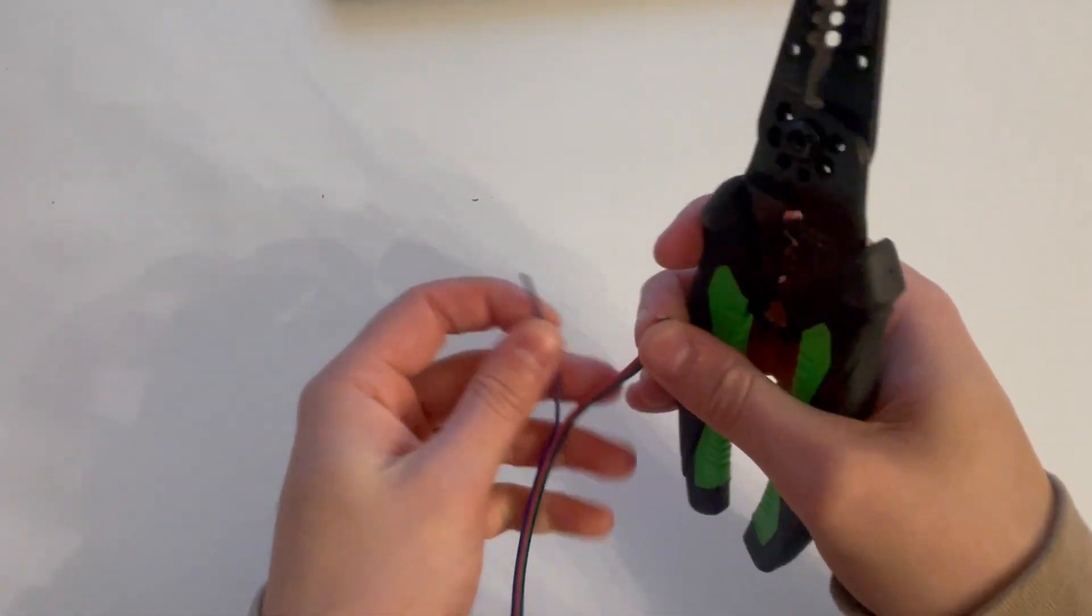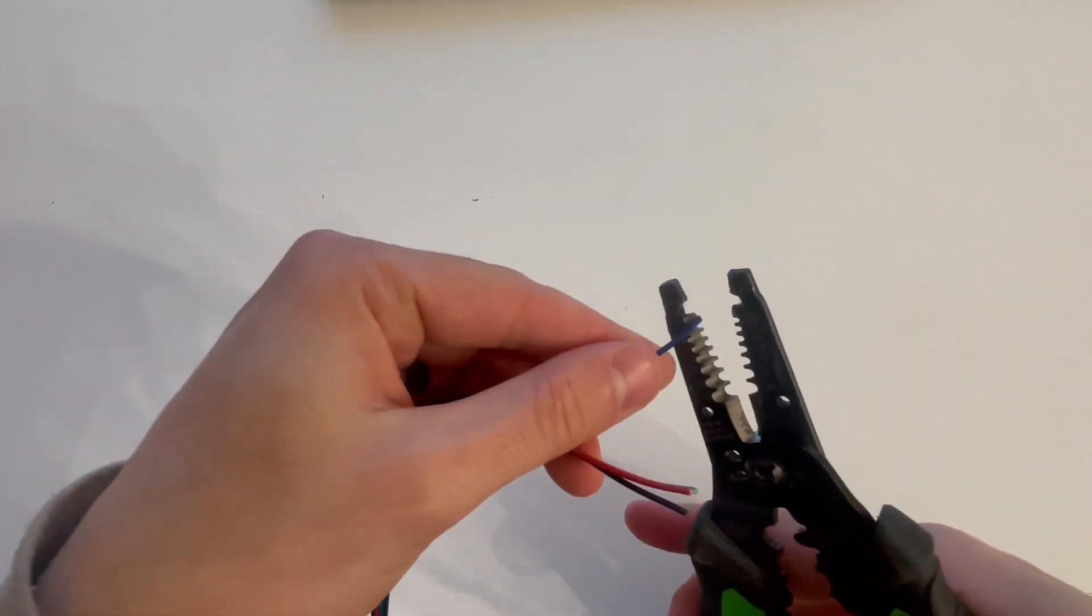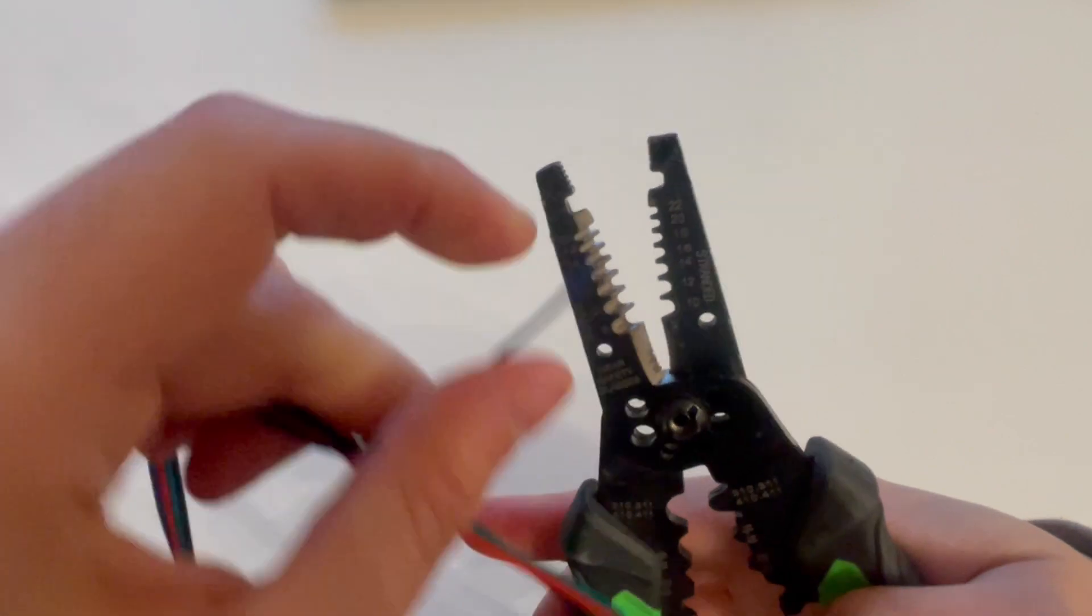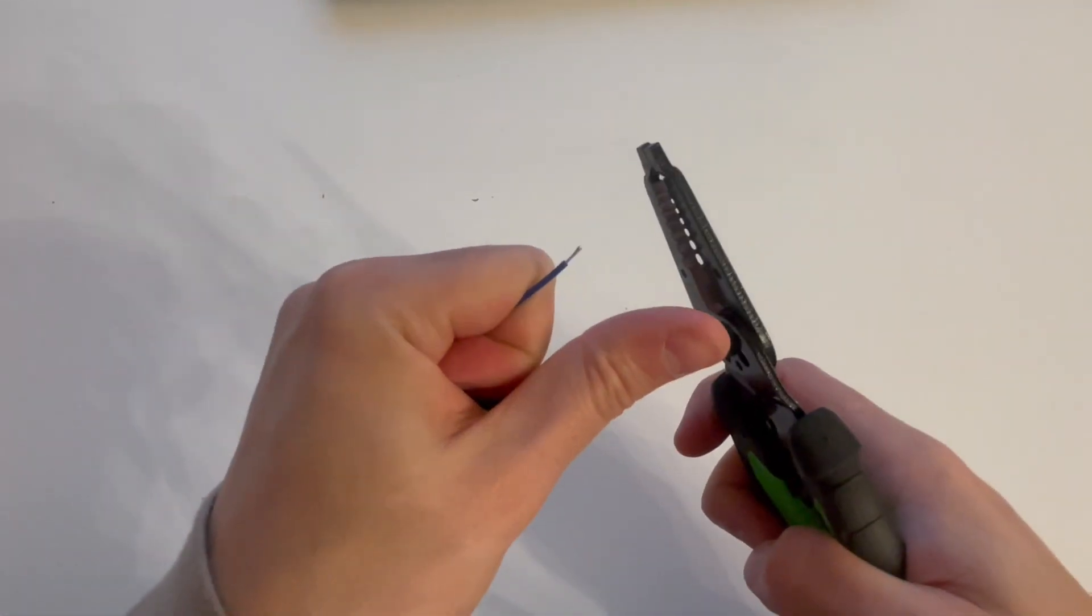So I'm going to show you how easy it is to strip these wires. This is 22 gauge wire, so you simply find the number 22, slide it in, boom.